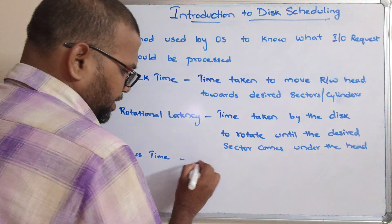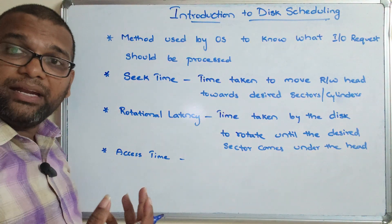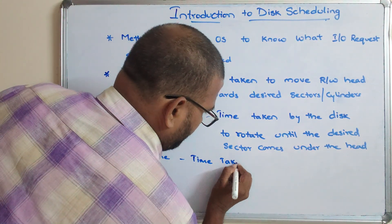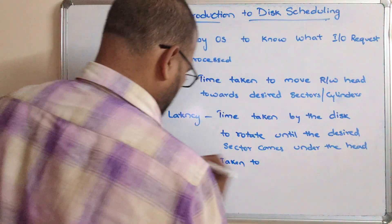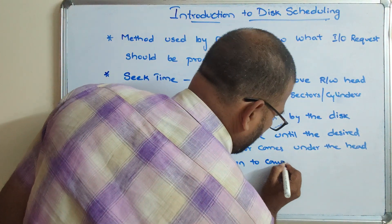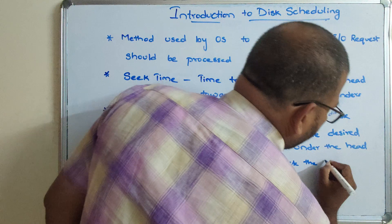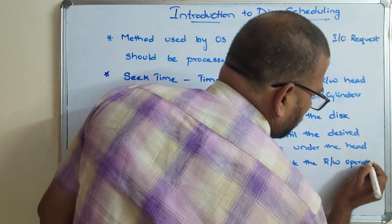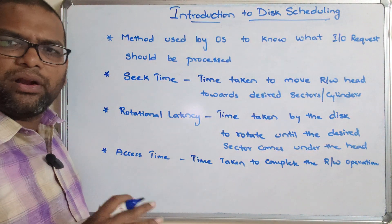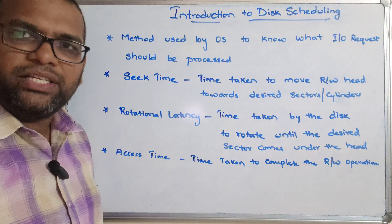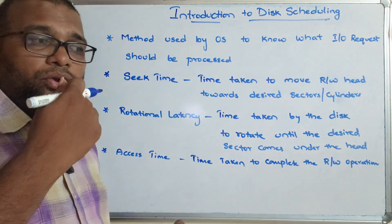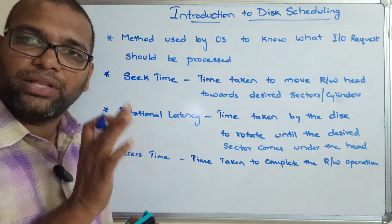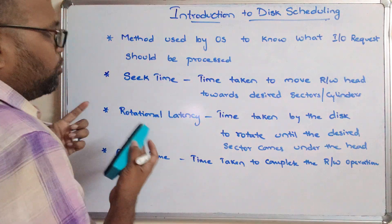Access time is the time taken to complete the read or write operation — only two things can be done: read or write. The last key term is starvation, which means an I/O request is not being processed and keeps waiting for a long time for its execution.